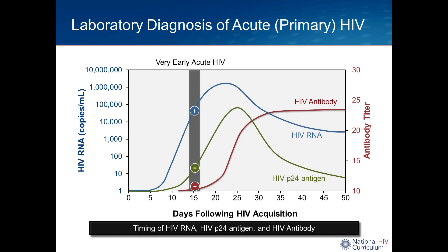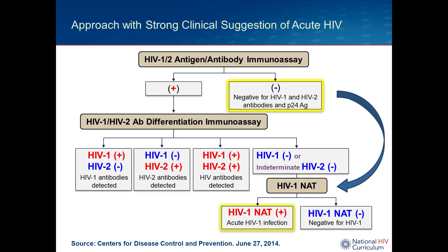You may also be testing someone on a routine basis and pick them up even before they have a clinical illness — what we call very early acute HIV. In this scenario, you can have a positive viral load, a negative P24 antigen, and a negative antibody test. To emphasize: if you highly suspect acute HIV in a clinical setting and the initial screening test is negative, the correct action is to directly order an HIV RNA test. That is the only way to effectively rule out acute HIV in that scenario.